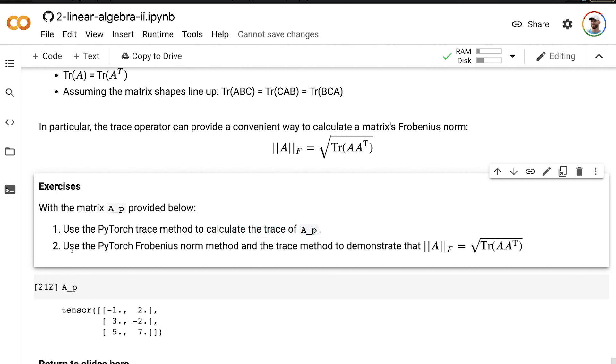And then similarly, browse the internet to find the PyTorch Frobenius norm method, and use that in conjunction with the trace method to demonstrate that the Frobenius norm is equal to the square root of the trace of A, A transpose.